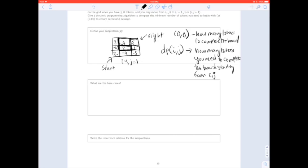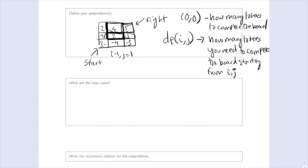The next question is: what are the base cases? Base cases in DP are similar to base cases in recursion — a case where you don't have to do any more work and don't need to rely on further subproblems. In this case, the base case will be DP[n-1][n-1] = 0. This is because when you're at the top right square, you don't have to pay anything to move out, and you've reached your final destination, so completing the board costs zero.